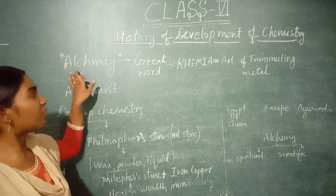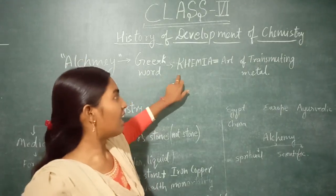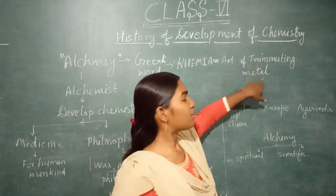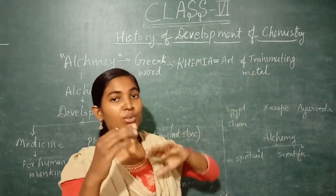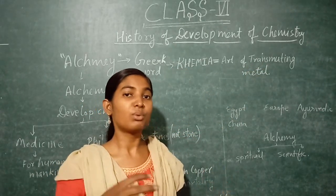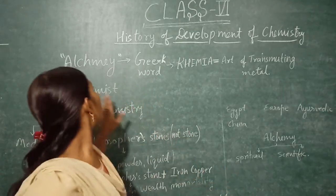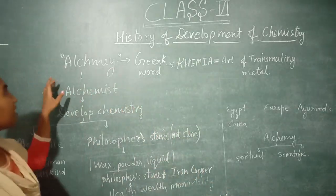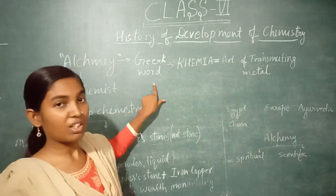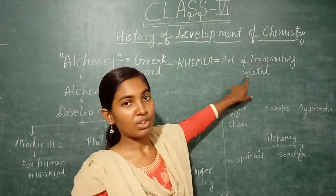Alchemy is derived from the Greek word 'chemia,' and this chemia means 'art of transmuting metal' — that is, to convert metal from one metal to another, or to take out metal from an alloy. So alchemy is the old name of chemistry, from the Greek word chemia meaning art of transmuting metal.